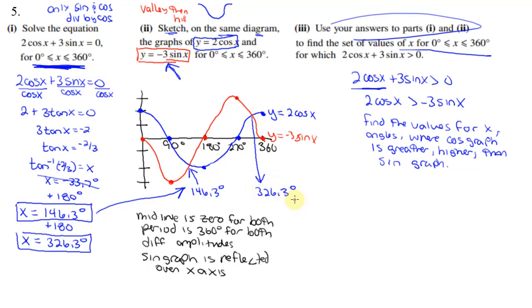And 326.3, that looks like that is there where we intersect. And if you take a look before that point and after that point, the cosine graph is above the sine graph. So this is what I would put in for my answer.